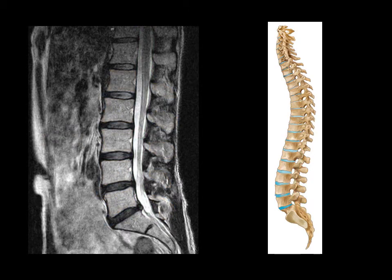A way to assess the proper structural placement of the vertebral bones and discs is to draw a line between the back of the vertebral bodies, disc, and spinal canal. The line should be a smooth, uninterrupted line, which is represented by this yellow line. Just a reminder, the blue ovals represent the discs.